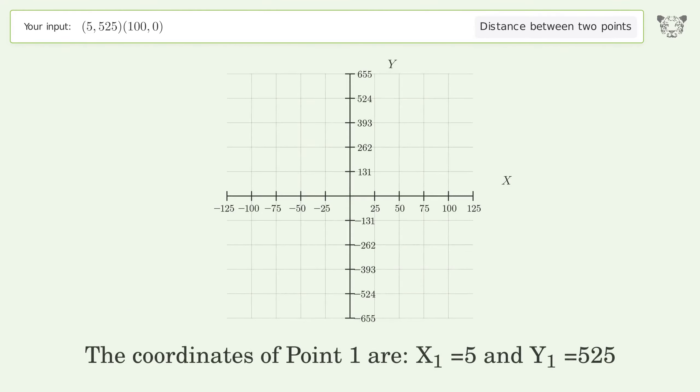The coordinates of Point 1 are x1 equals 5 and y1 equals 525. The coordinates of Point 2 are x2 equals 100 and y2 equals 0.